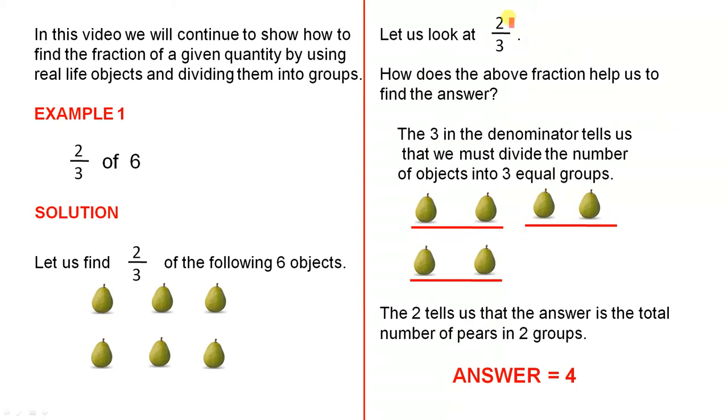What does the 2 tell us? The 2 tells us that the answer is the total number of pairs in 2 groups, not just 1 group, but 2 groups because that's a 2. So let's look at 2 groups. There's 1 group there, and there's another one. 1, 2, 3, 4. So the total number of pairs in 2 groups is 4, so the answer equals 4. So 2 thirds of 6 equals 4.